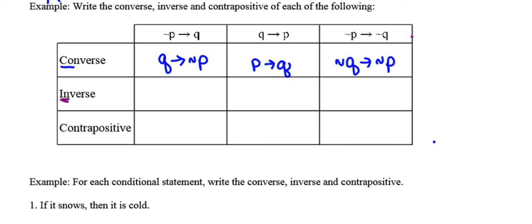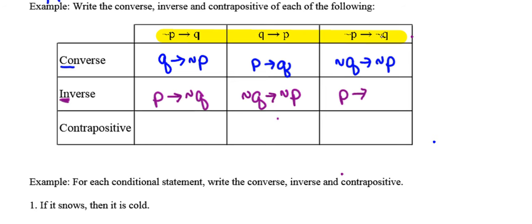For the inverse, I go back to the original statements and negate. Going back to the originals highlighted in yellow, I negate each part. Negation of not P becomes P; negation of Q becomes not Q. For the second one, negating the first part gives not Q, negating the second part gives not P. For the last one, negating the hypothesis gives P, and negating the conclusion gives Q.